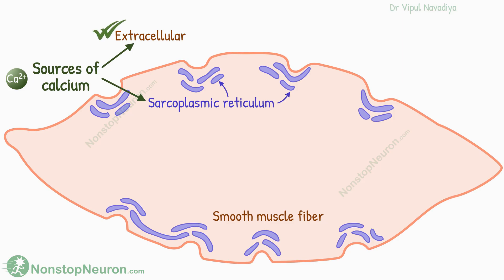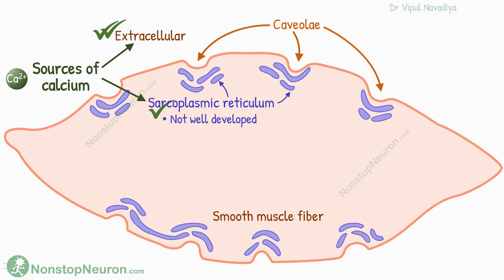Extracellular fluid is the main source, but there are some interesting things to know about sarcoplasmic reticulum as well. The sarcoplasmic reticulum in smooth muscles is not as well developed as in skeletal muscles. It lies near the cell membrane. Close to it, the cell membrane forms small invaginations called caveolae.